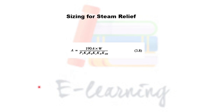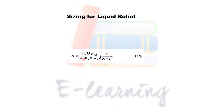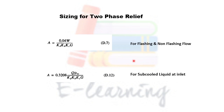If the fluid in our system is steam, we will use equation 3.8 for orifice sizing. If the PSV has to release liquid, we would use equation 3.9 for orifice sizing.